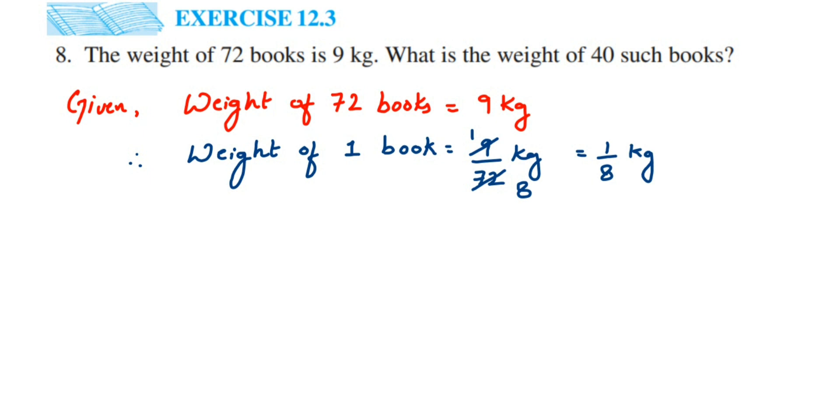Now let's find out further, we have to find out the weight of 40 such books. So for 1 book, it is 1 by 8 kg. So for 40 books, we have to multiply by 40.